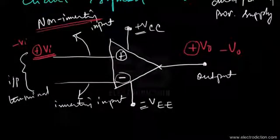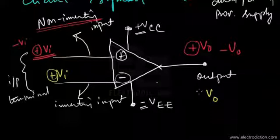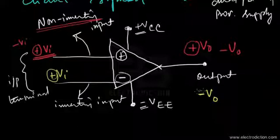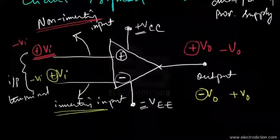On the other hand, if we apply the same input voltage with positive polarity to the inverting input — the one with the negative sign — although the magnitude of the output voltage would be the same, the polarity of the output voltage would be inverted or reversed. So there is a reversal of polarity at the output in comparison with the input. That is why this terminal is known as the inverting input terminal. Similarly, applying a negative polarity input voltage to the inverting input would produce a positive polarity output voltage.